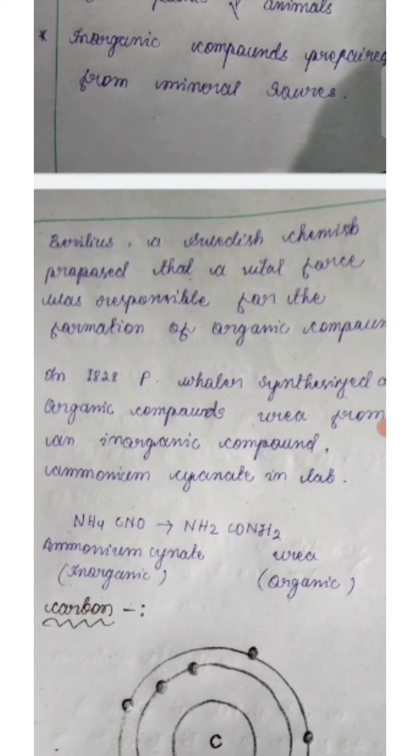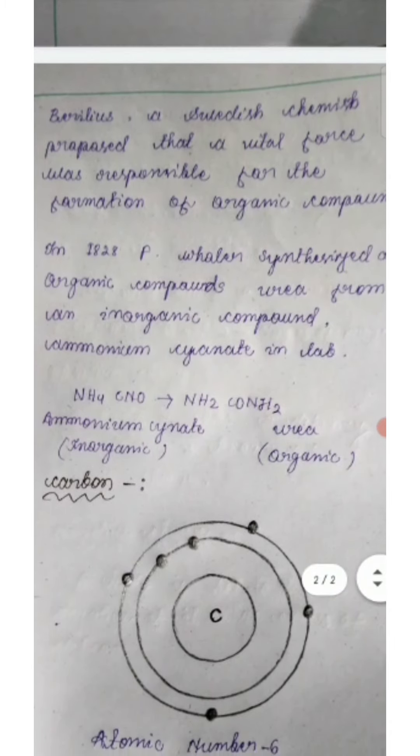Then a chemist, in 1828 Frederick Wohler synthesized an organic compound urea from an inorganic compound ammonium cyanide.